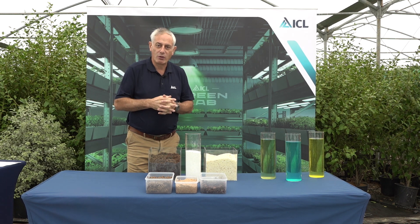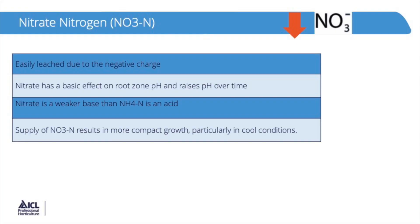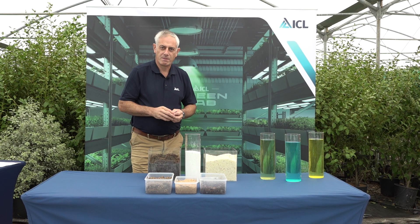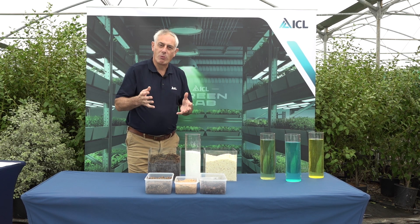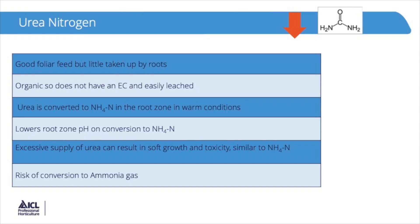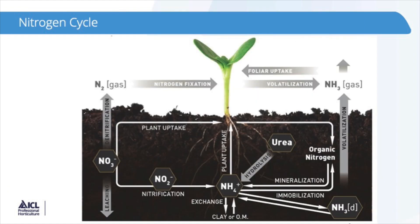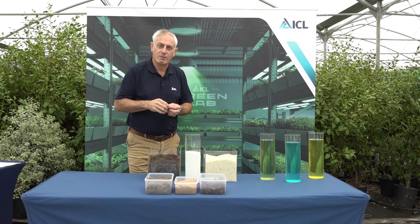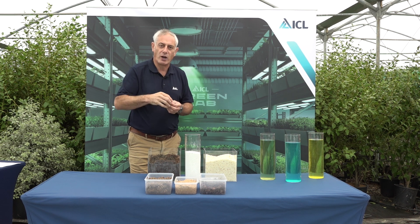The common form of nitrogen we hear a lot about is nitrate nitrogen. This is negatively charged, and this is why there's such concern about nitrates — it can be leached very easily from growing media. The next form is urea nitrogen, commonly used in agriculture where farmers apply prills of urea. You need to understand the nitrogen cycle to appreciate this, but this form of nitrogen can volatilise into ammonia gas and be given off, so you have to be careful when using it, particularly in glasshouses, as you can get plant damage. It's also not directly taken up by the plant, so it needs to break down into other forms of nitrogen first.